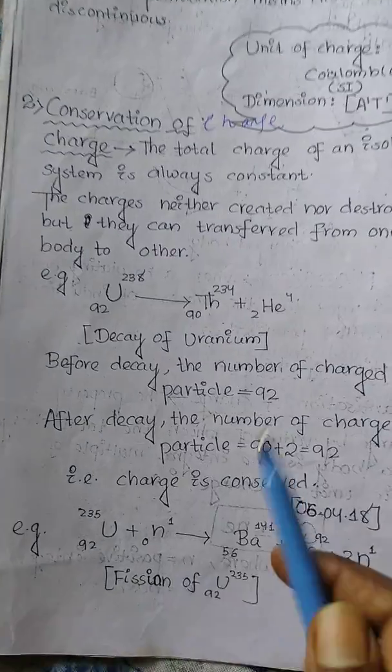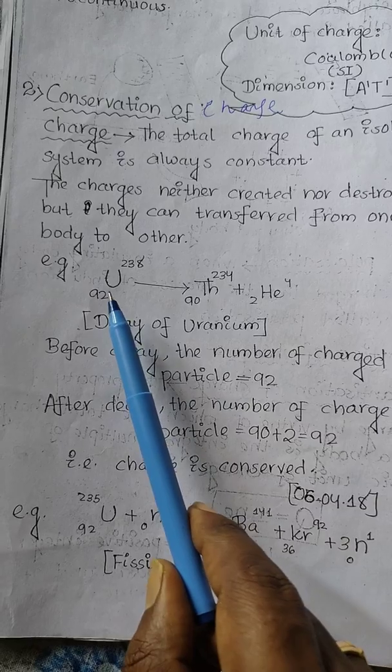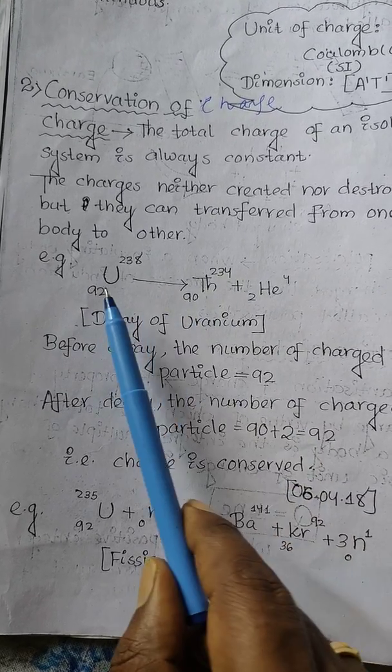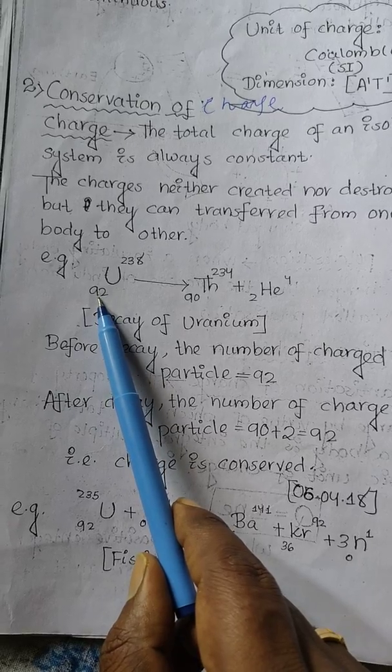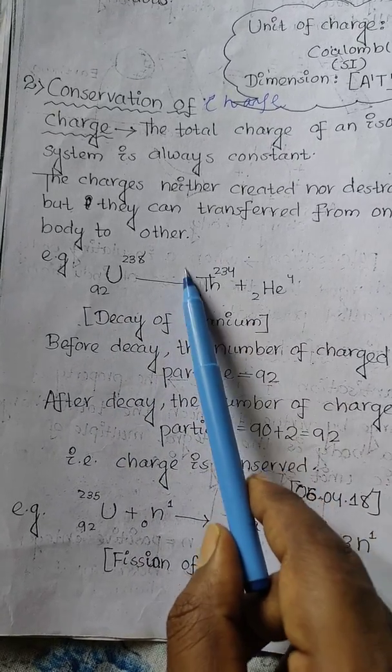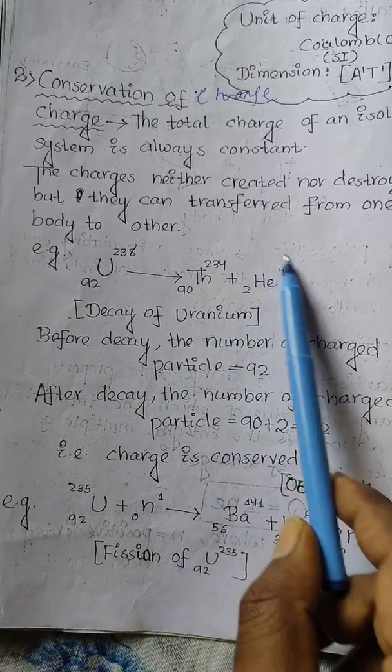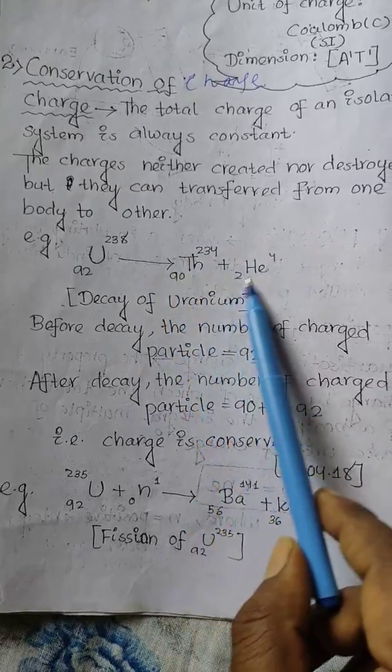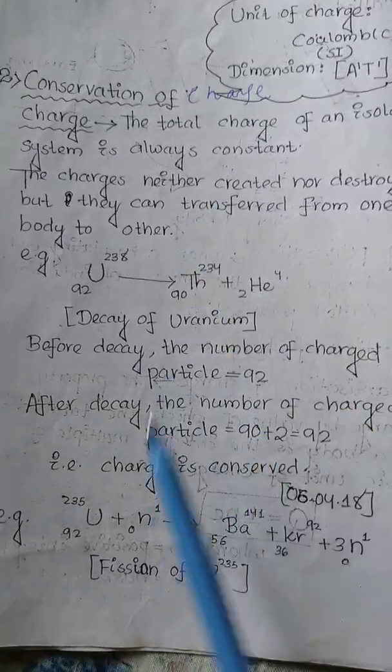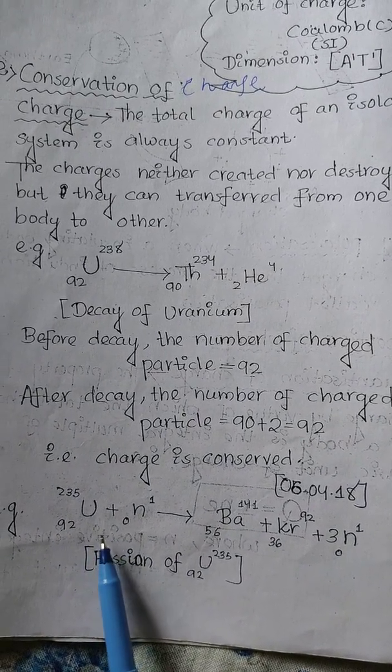For example, uranium-92 emits an alpha particle (helium-4). The atomic number 92 becomes 90 plus 2. Before decay, uranium had 92 protons. After decay, the system has 90 plus 2 protons. The number of charges is conserved - charge is not lost in the system but is conserved. This is an important example of conservation. Uranium fission is another example.